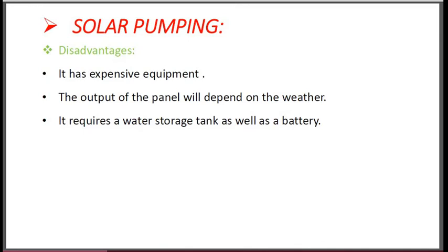The output of the solar panel depends on the weather, meaning solar irradiation — because solar panel current is directly proportional to the irradiation of the solar. It requires a water storage tank as well as a battery bank. Solar pumping systems must have both a water storage tank and a battery bank, and we know the cost of batteries is very high.